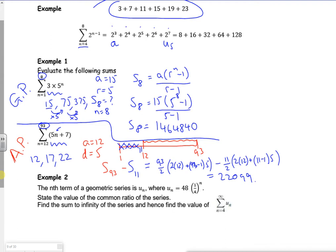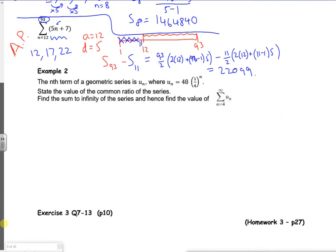Right then, let's have a look at this last example, example two. It says the nth term of a geometric sequence is un = 48 times a quarter to the n. So what do we know then? If un is 48 times a quarter to the power n, we know that r is a quarter, because no matter what, we'll be times-ing by a quarter every time.